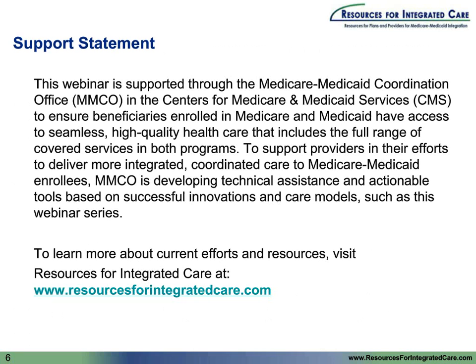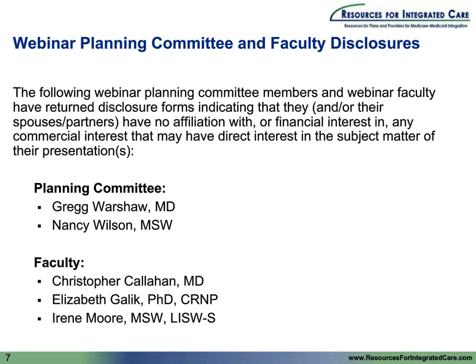Continuing medical education and continuing education credit is available for today's webinar from the American Geriatric Society and the National Association of Social Workers. In order to receive credit, please read the instructions, complete the pre-test by 12:20 p.m. Eastern time, participate in today's webinar, complete the post-test with a score of at least 80% by 2 p.m. Eastern, and complete the program evaluation form by 5 p.m. Eastern. CME and CE certificates will be emailed approximately 4 to 8 weeks after the post-test is completed.